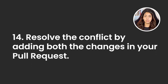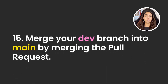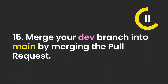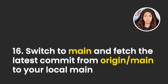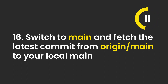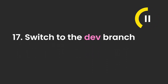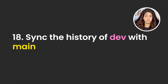Go back to the pull request that you created previously and you'll be able to see a merge conflict. Now resolve this merge conflict by picking both of the changes. Now merge your dev branch into main. Go back to your terminal and switch to main branch. Fetch the latest changes from origin main and merge them into your local main. Now switch to the dev branch and sync or reset the history of the dev branch to be the same as the main branch. This I haven't really talked about so far, but I'll leave it to you to figure it out.